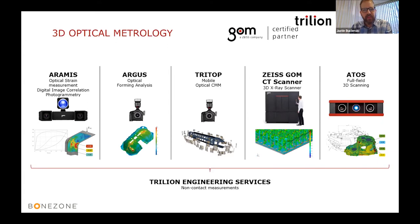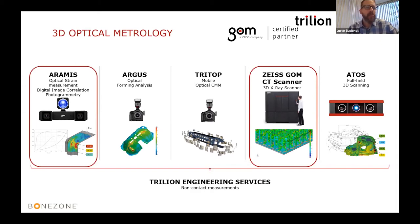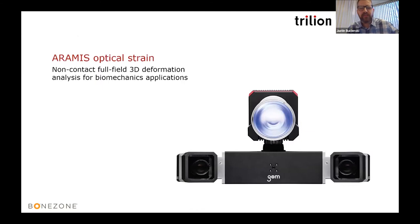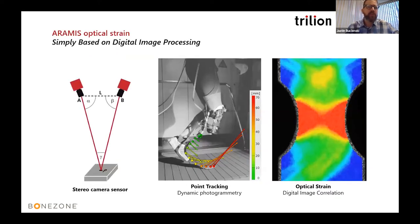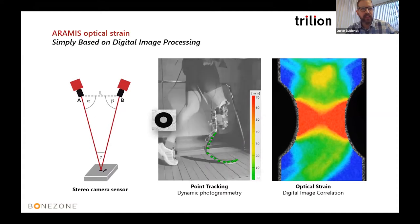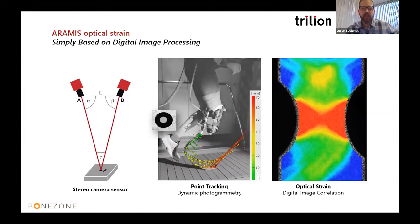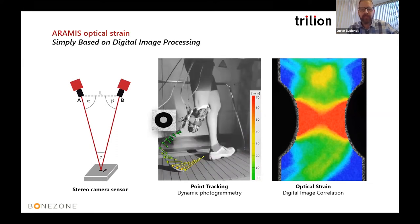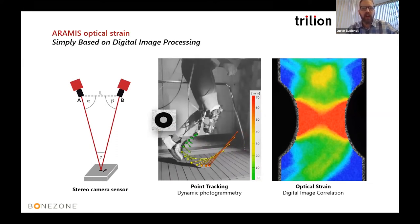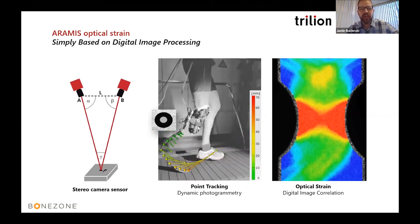Here's the GOM lineup of measuring systems. Today we're going to concentrate on the Aramis and the Zeiss GOM CT scanner. Aramis is an optical strain gauge for full-field strain and displacement measurements — it's a pair of cameras and a blue light. Aramis uses triangulation between the cameras to track either target dots or speckle pattern along the surface of your specimen. Anywhere you stick a dot becomes a 3D coordinate, and the cameras capture displacements in all directions along with velocity and acceleration.